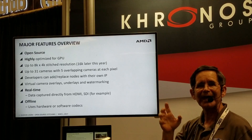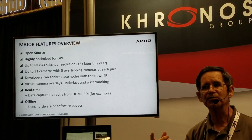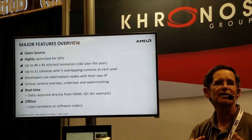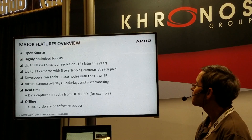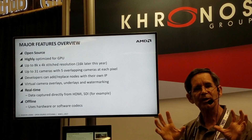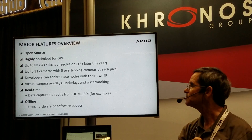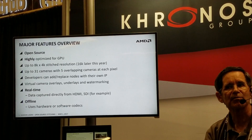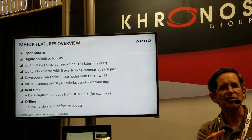We currently handle up to 8K by 4K videos. Right now, if you walk around the show floor and see videos, almost exclusively they're only going to be 4K by 2K or less. So we already handle videos that are higher resolution than what everyone's headsets can use. We handle up to 31 cameras. You can have five overlapping positions, five overlapping pixels at each position. You can add and replace components of this software with your own — we built the API so you can add your own modules as well.